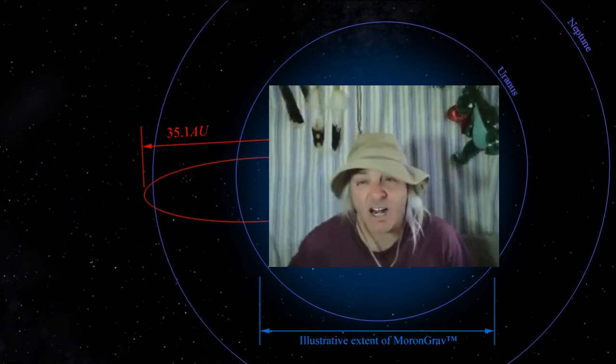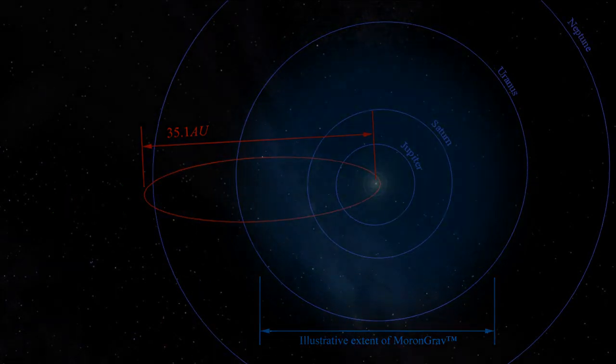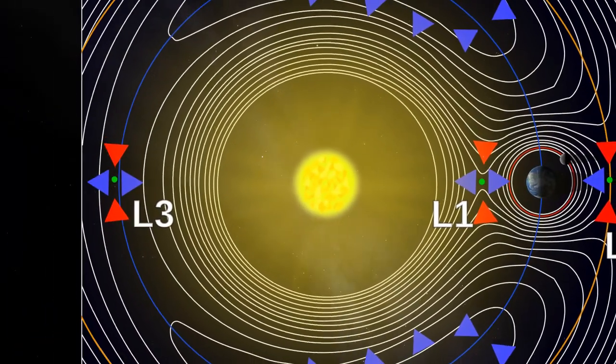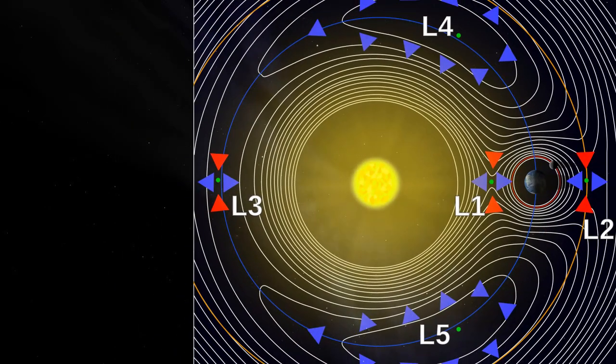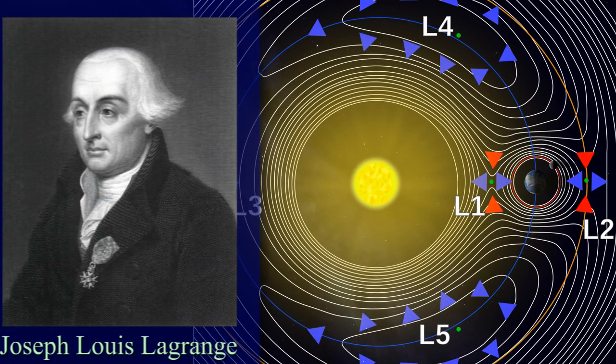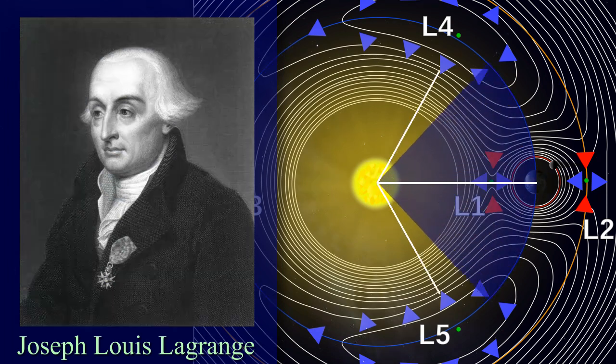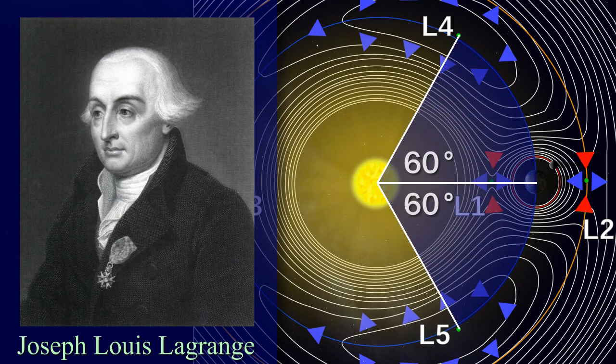Another effect of gravity not dropping to zero to suit geocentrists is that of Lagrangian points, named after the French mathematician Joseph-Louis Lagrange, who discovered the L4 and L5 points mathematically in 1772. They lie 60 degrees ahead and behind a body in its orbit.